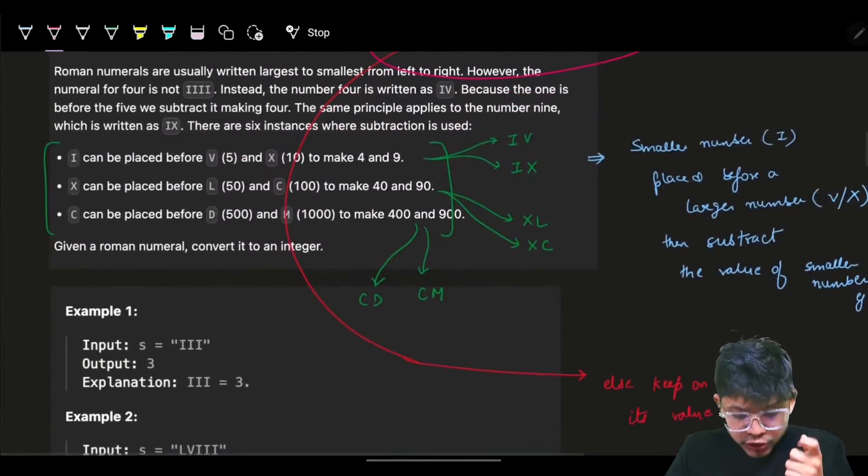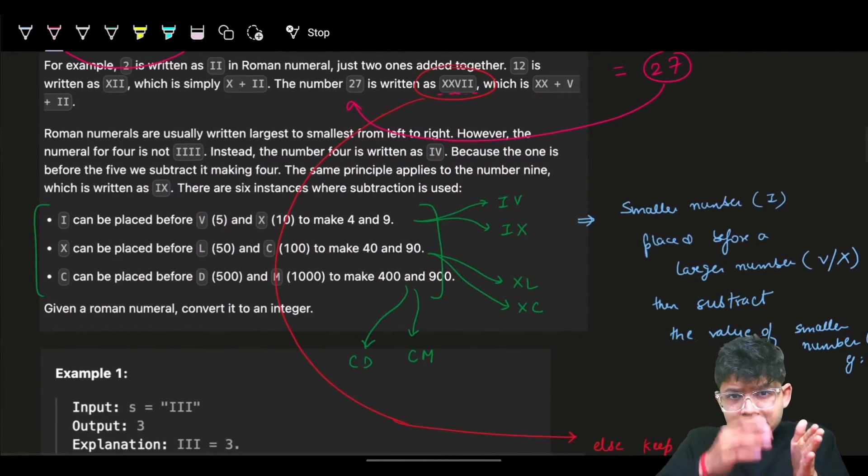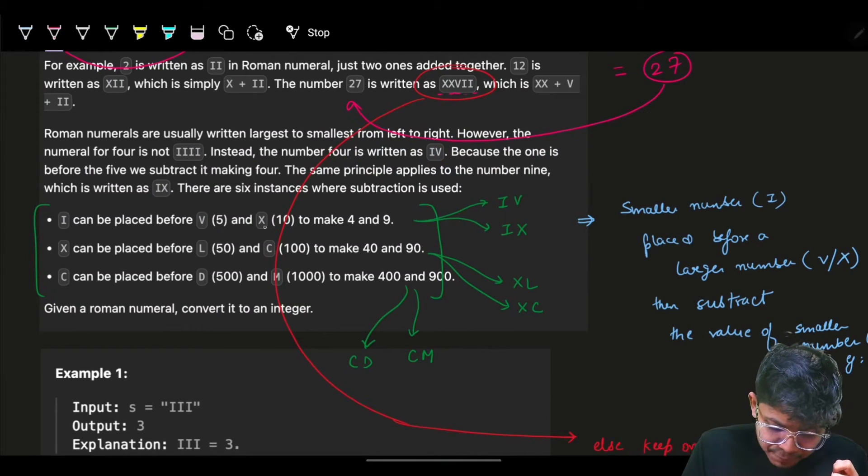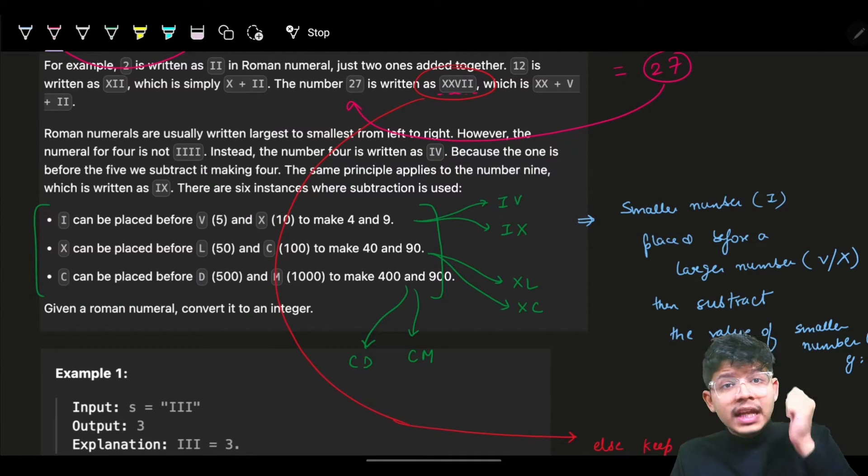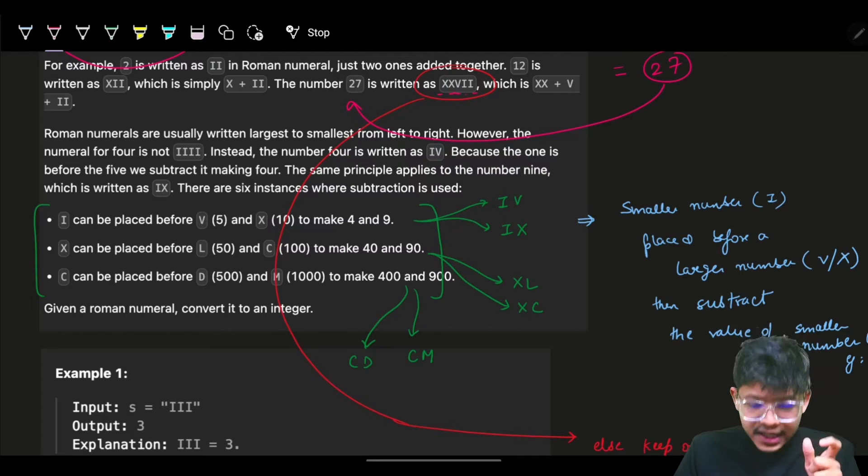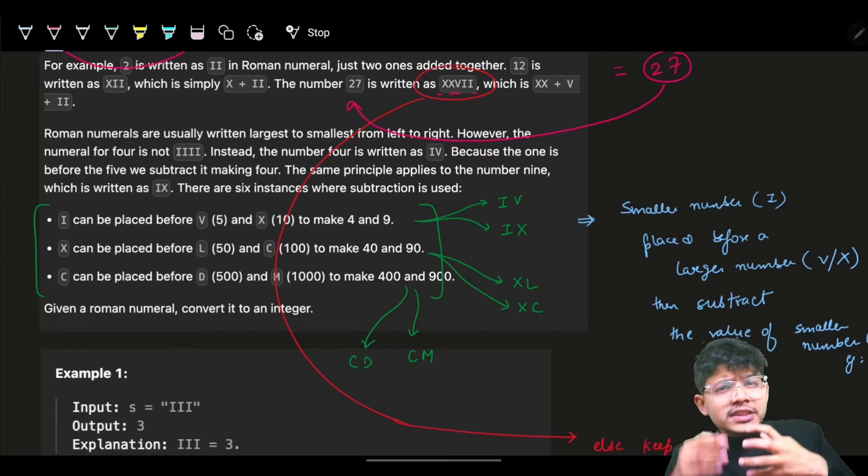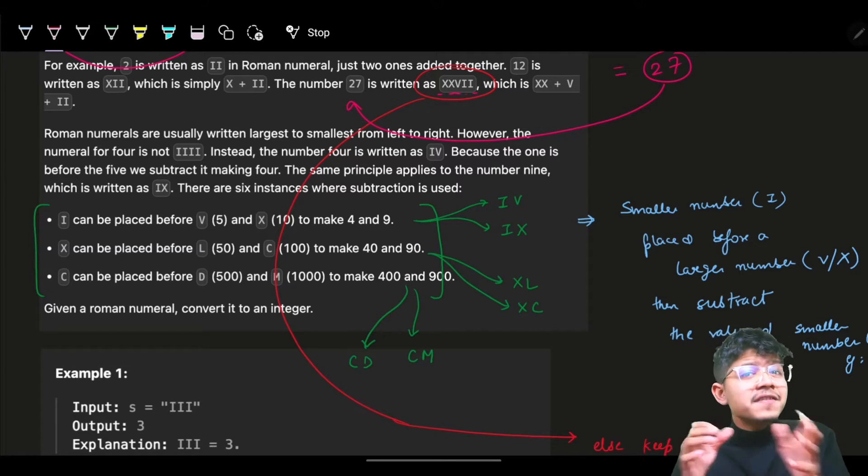In Roman numerals you also write some numbers that are not in order. If I want to write 4, I don't write 1+1+1+1, I write it as IV. For some specific numbers I have some pattern, and they have also given that pattern.